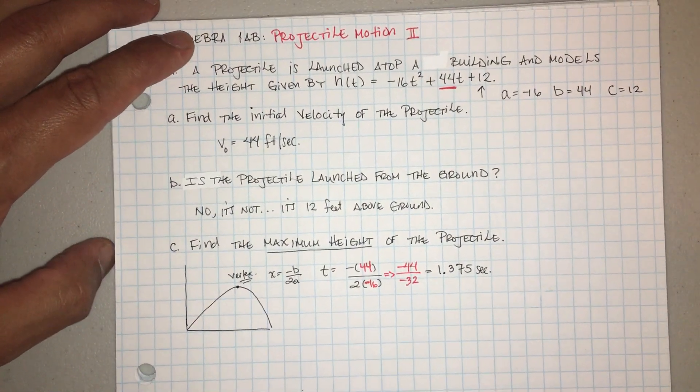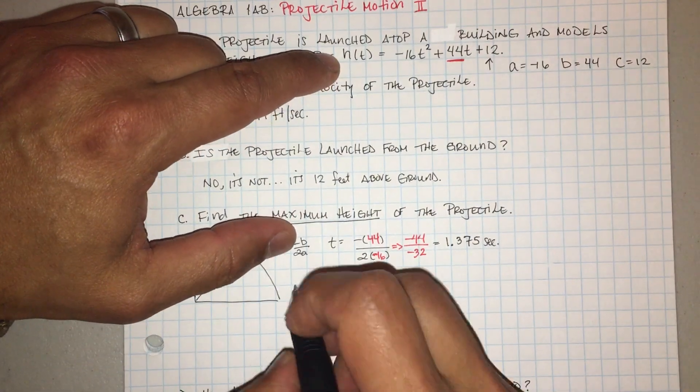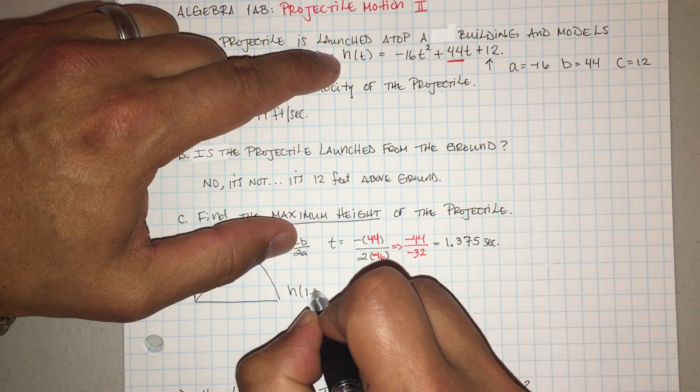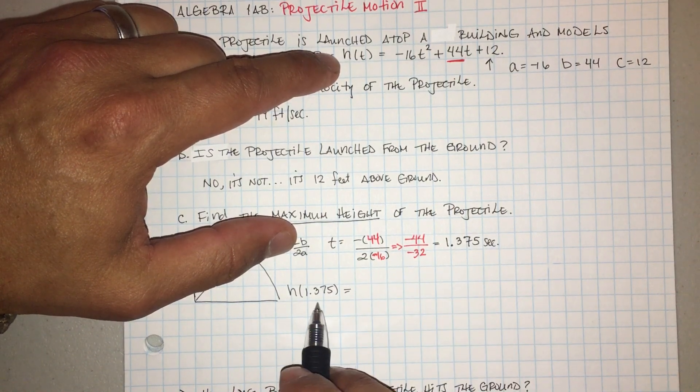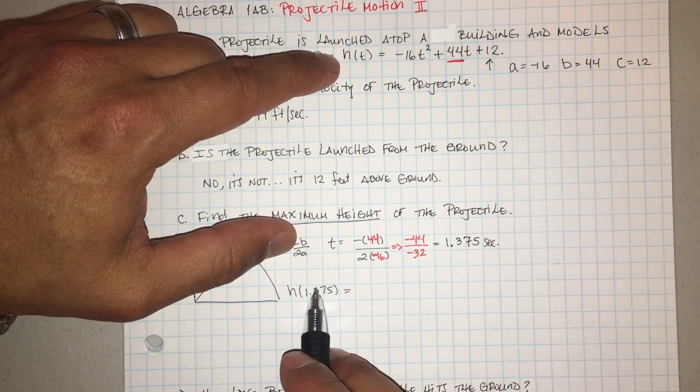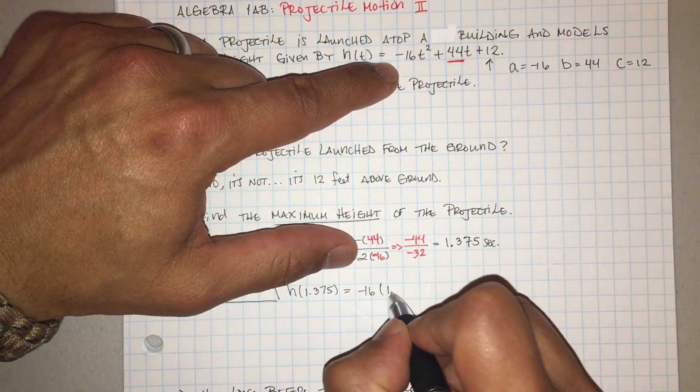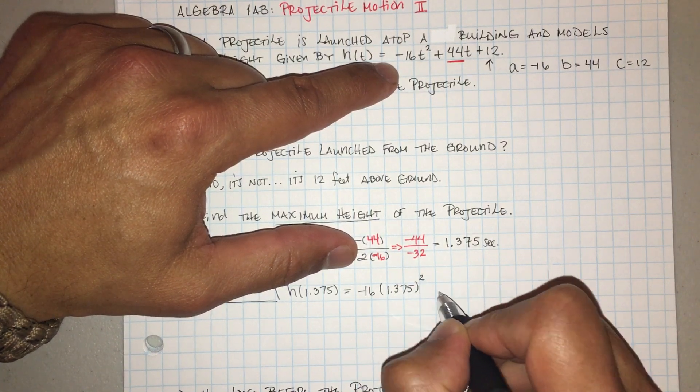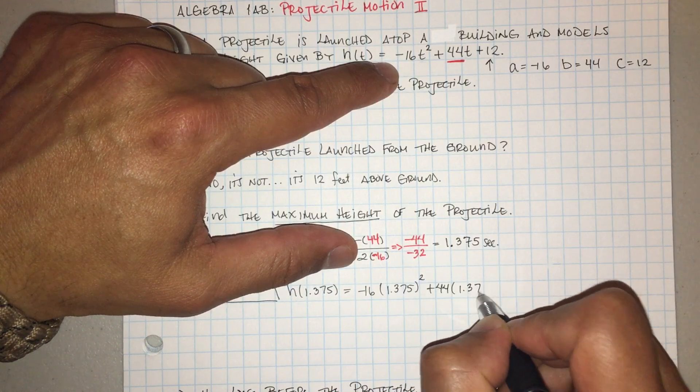I have to take this value. Tengo que agarrar este valor y lo tengo que meter aquí y aquí. Okay, so this is the height h, the height at 1.375 seconds. La altura, de, la altura a este tiempo me va a dar. So it's negative 16 times 1.375 squared plus 44 times 1.375 plus 12.